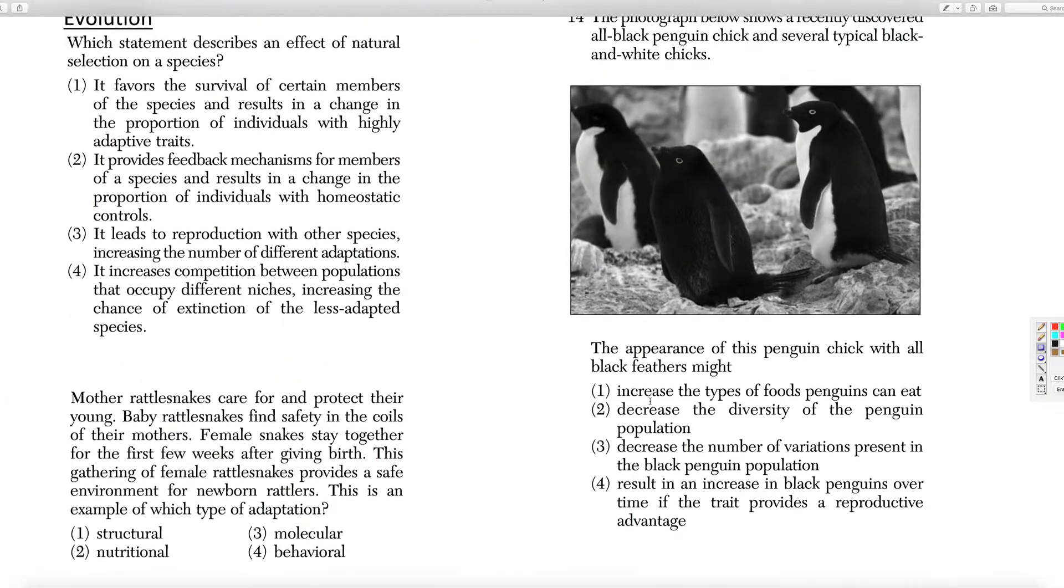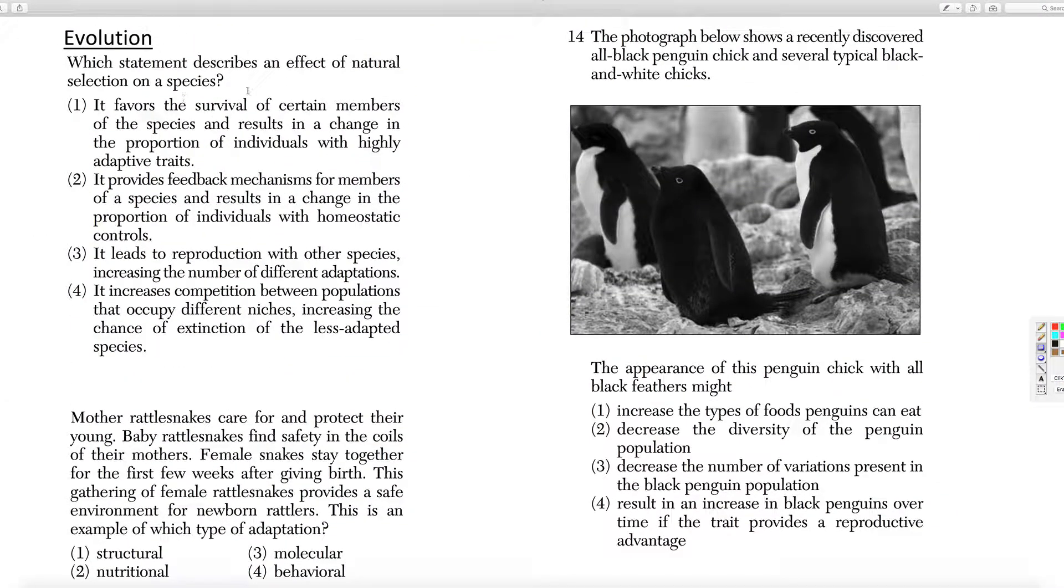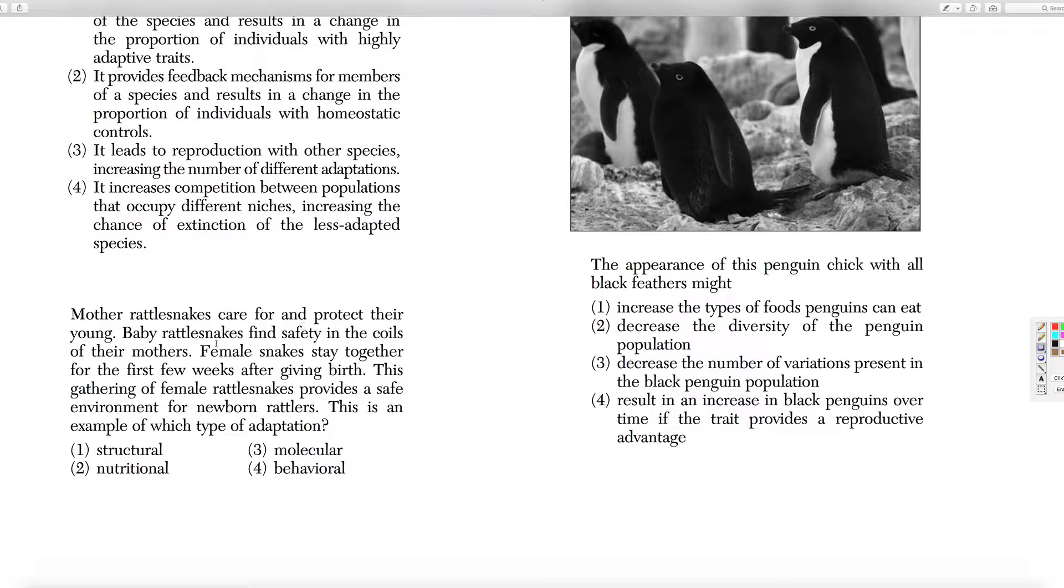Which statement describes the effect of natural selection? It favors certain species with highly adaptive traits. Mother rattlesnakes care for and protect their young. This is an example of what type of adaptation. So, it's a behavioral adaptation that they coil and protect their young. It's a behavior that they're doing.